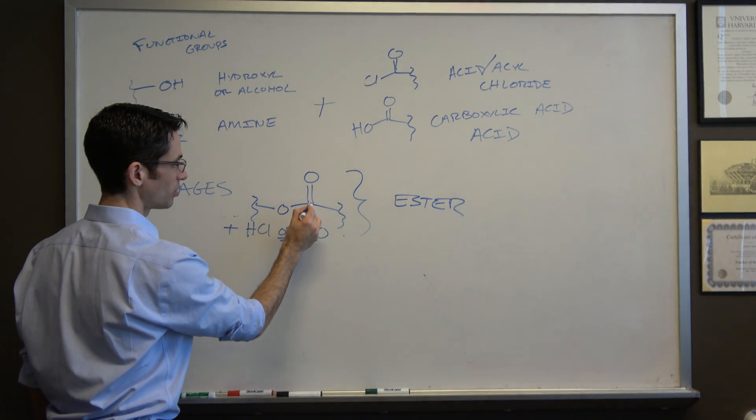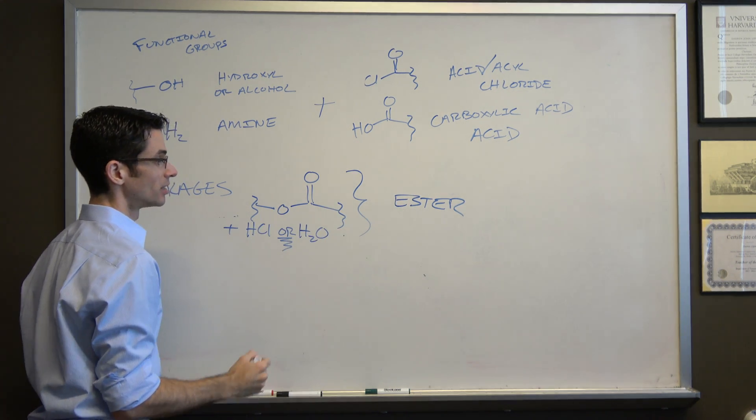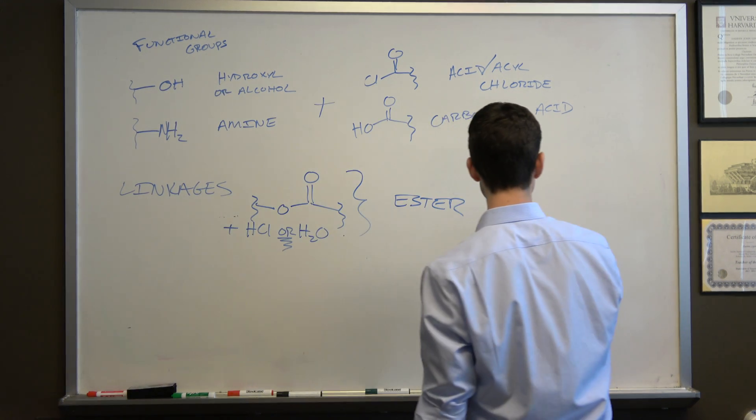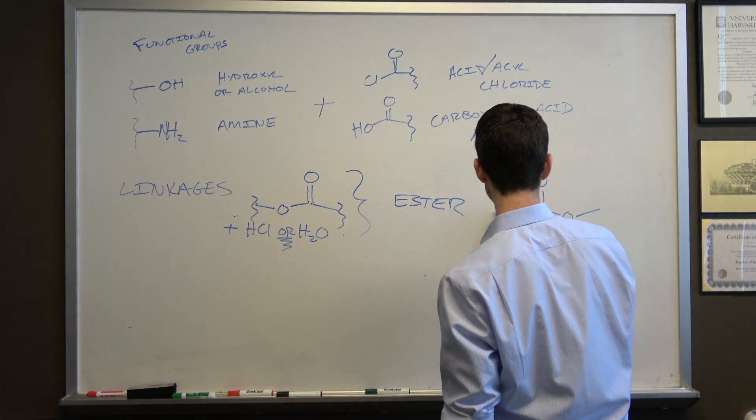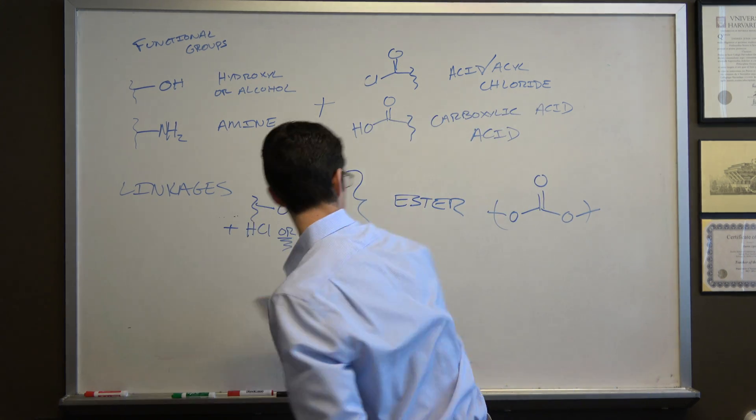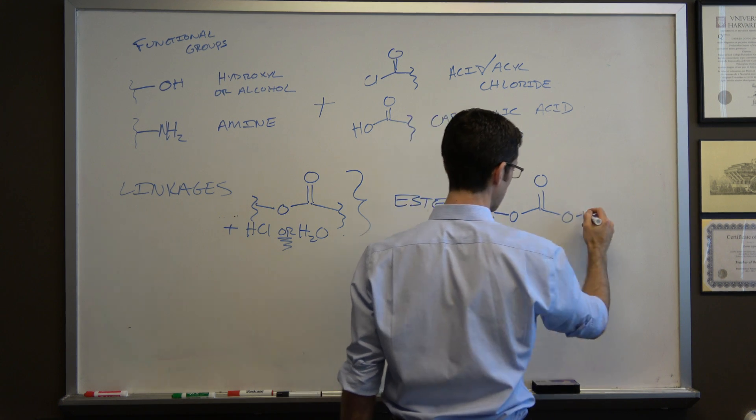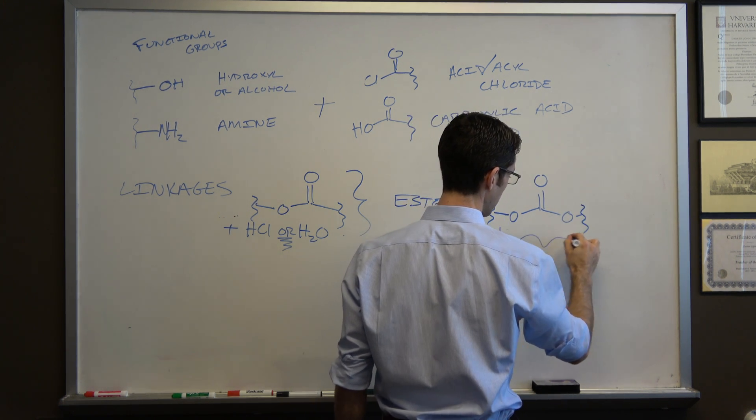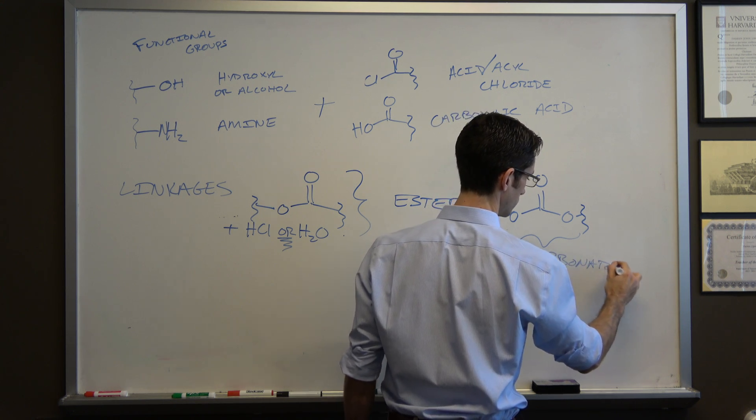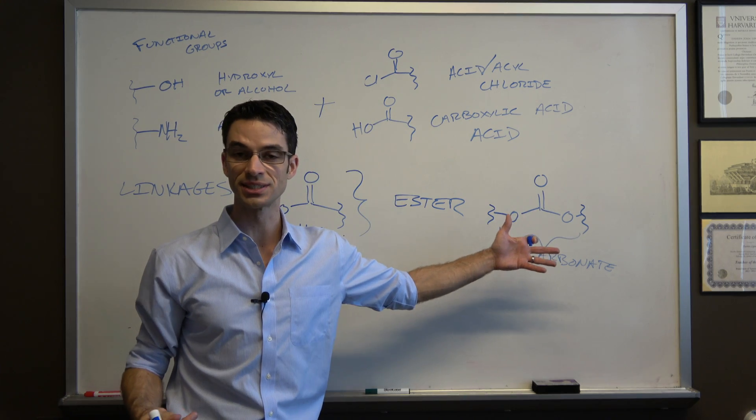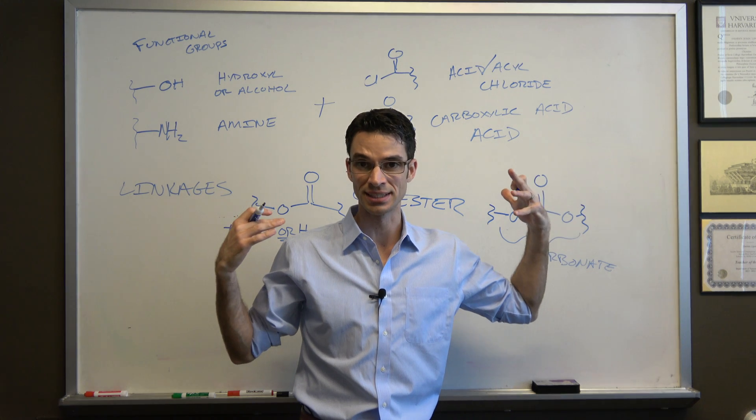An ester is C double bond O bonded to an O and then something out here. Closely related to the ester is what we talked about in class, which is a carbonate. We'll just draw squiggled lines to indicate that this could be anything. This is called a carbonate, which is like two esters at once - it's an ester on this side and it's an ester on this side.